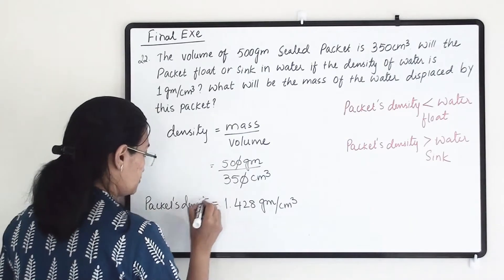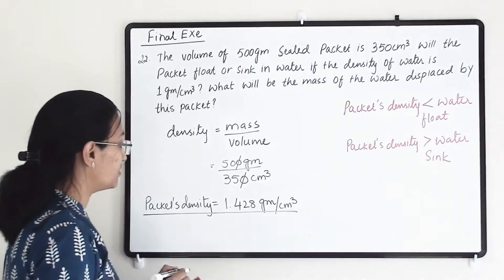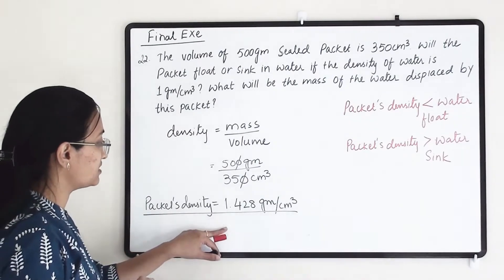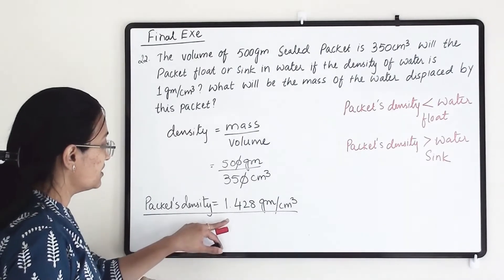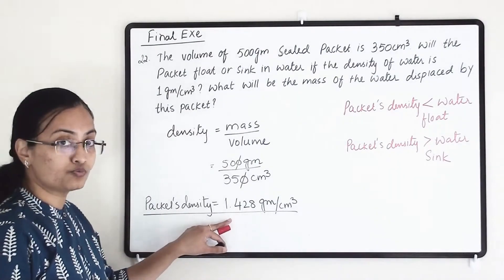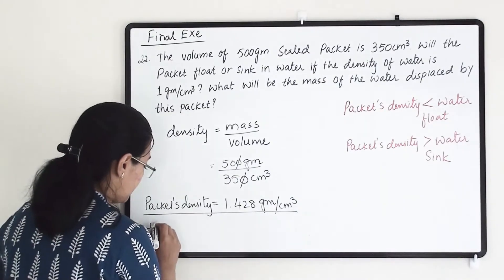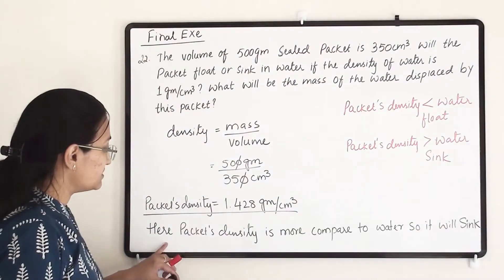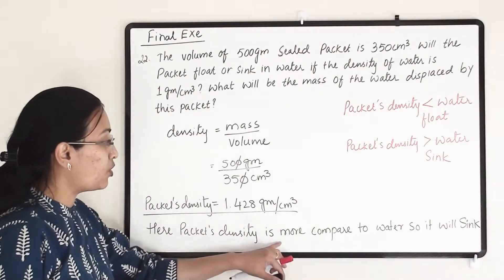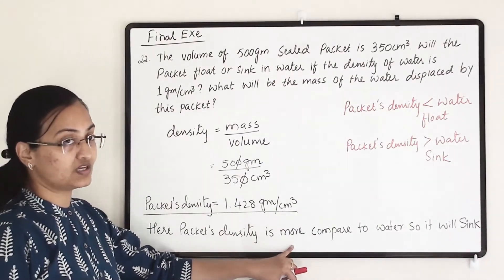The packet's density is 1.428 grams per centimeter cube. Comparing this with water's density of 1 gram per centimeter cube, the packet's density is more. So the packet will sink in the water.